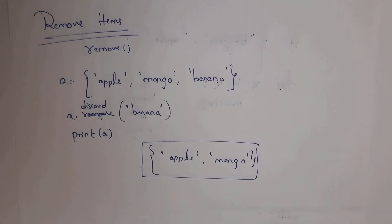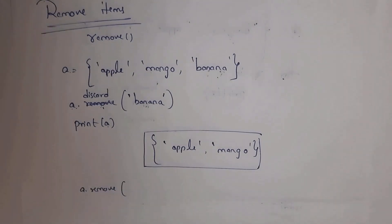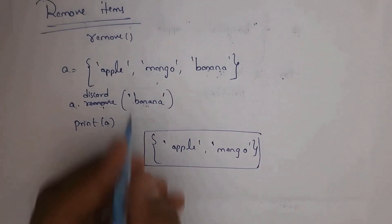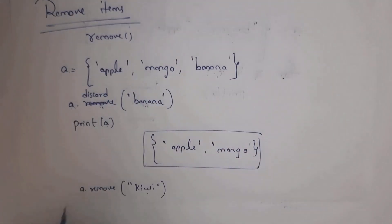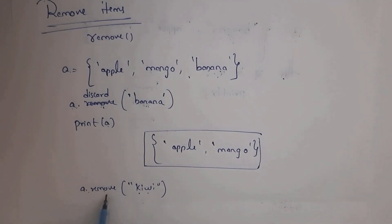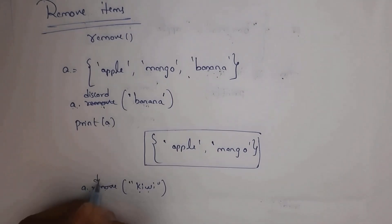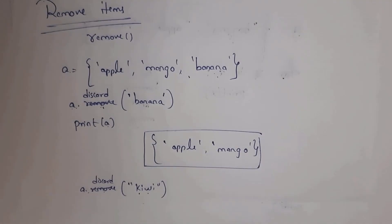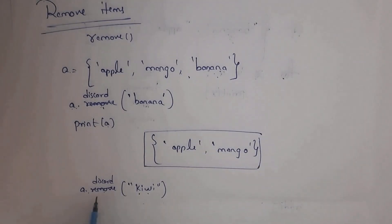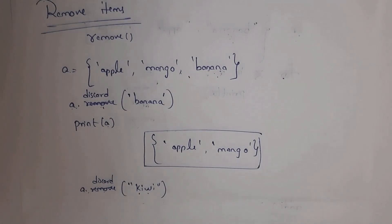What is the difference between the discard method and the remove method? If you use remove and the item is not present in the set, it will display an error. For example, a.remove('kiwi') — since kiwi is not present, it will display an error. But if you use discard — a.discard('kiwi') — it will not display any error if the item is not present. Whenever you write print(a), you will get output apple, mango, banana.